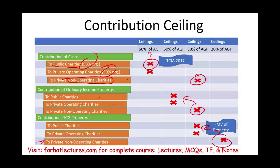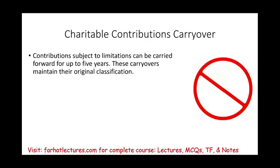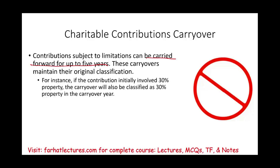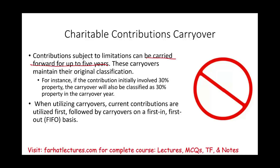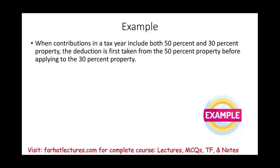If you don't use the full deduction because you've reached the limit, contributions subject to limitation may be carried forward up to five years. Carried-forward amounts maintain their original classification — whether 30% property or 50% property. When utilizing carryovers, current-year contributions are utilized first, then prior-year carryovers on a first-in, first-out basis. When contributions in a tax year include both 50% and 30% property, the deduction is taken from the 50% property first before applying the 30% property.